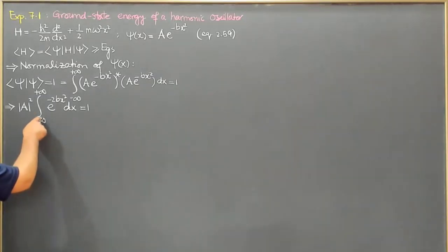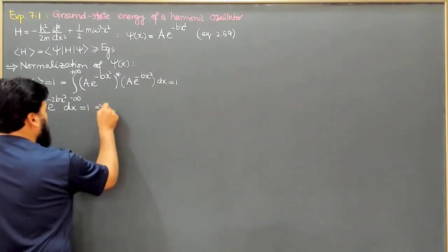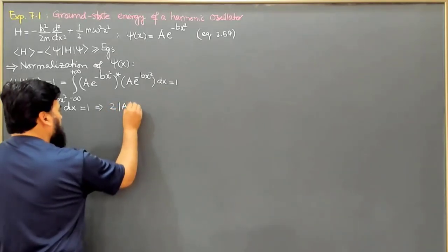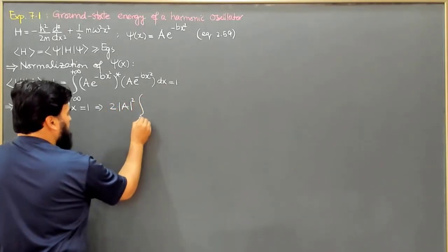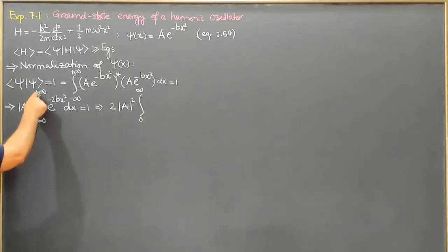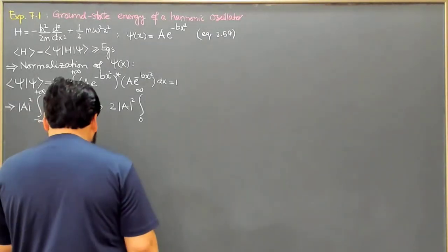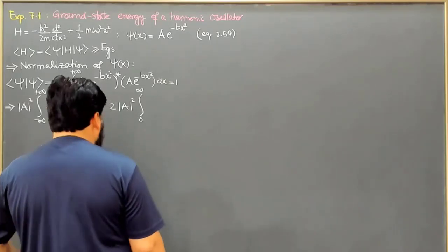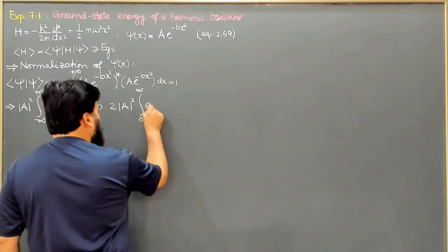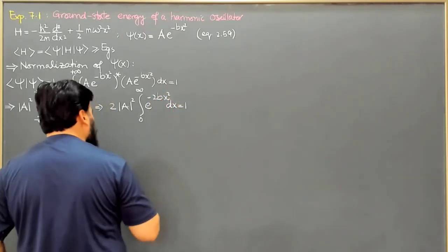This integrand is an even function, so we can write it as 2 times A mod squared times the integral from 0 to infinity of e to the power minus 2b x squared dx, which equals 1.